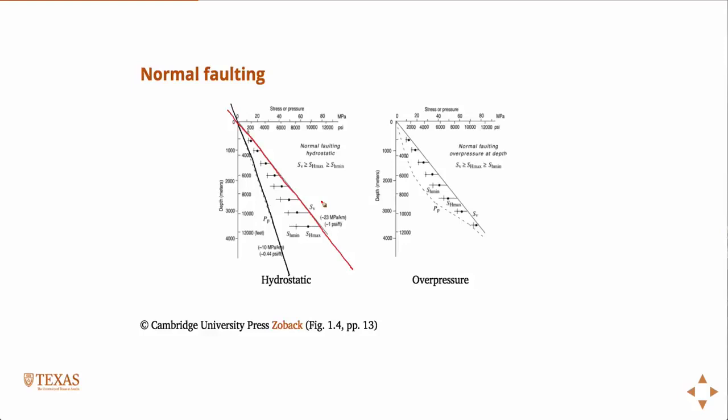And then, just by definition, we know that SH max must be in between those two guys. So this is just a qualitative picture of what would happen in normal faulting, again, Andersonian classification. SV is the maximum. The other two are in between.